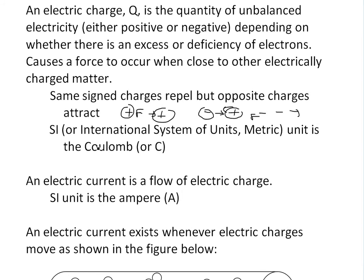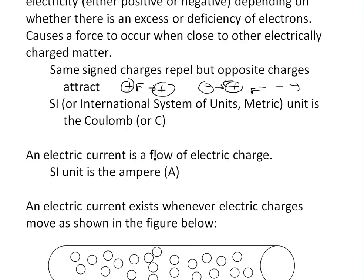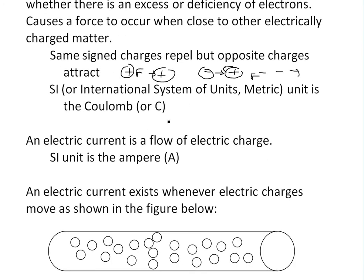The SI or International System of Units, which is also a metric unit, is the coulomb or written as C. I'm not going to go over too much on how it's defined right now. I'll do that in another video.